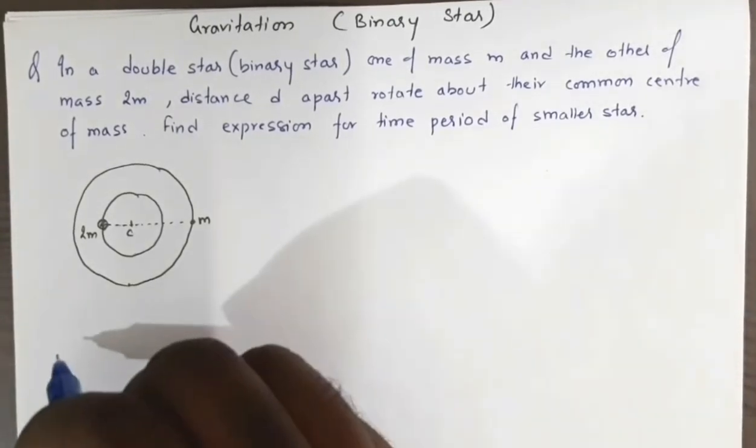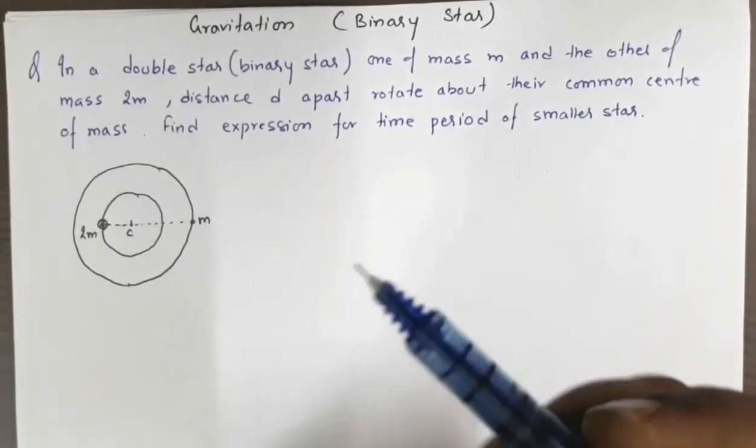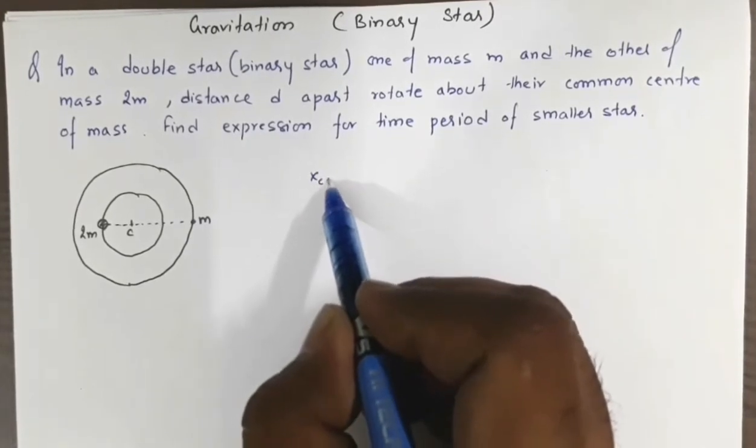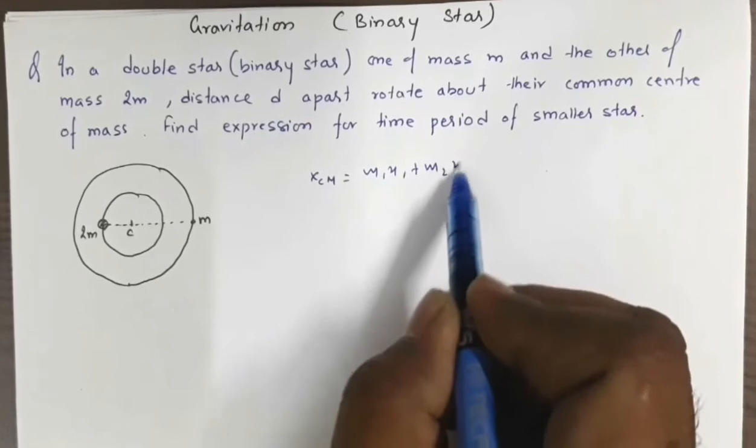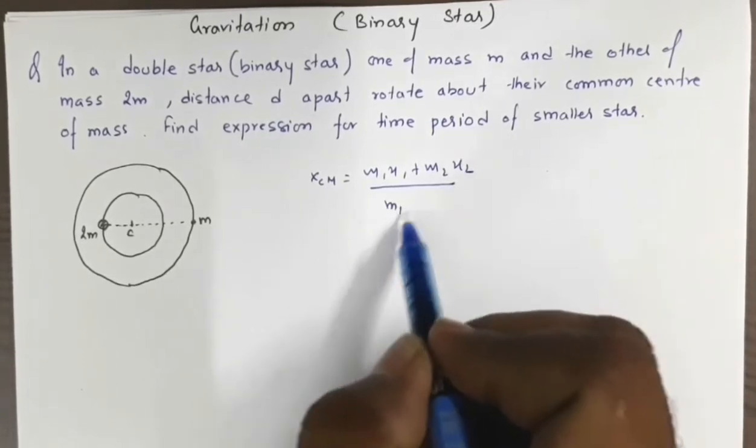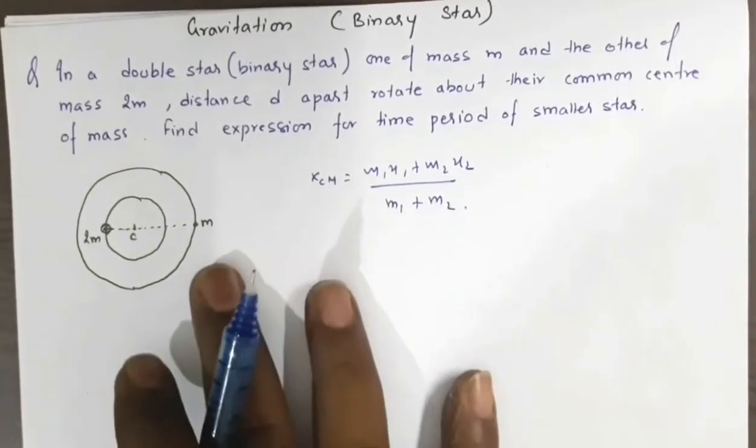First, our goal is to locate the center of mass. The center of mass x_cm is given by: x_cm = (m1·x1 + m2·x2)/(m1 + m2).